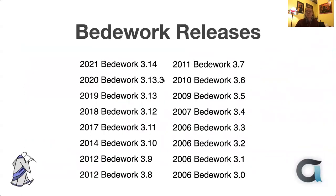These are some of the releases over time, starting with 3.0 in 2006. We got a bit more careful over the numbering as time's gone on. We're still running on 3. I'm toying with the idea of going to 4 — that was going to be the big schema change, which I still haven't got around to. Maybe the changes I'm making with Wildfly are appropriate for a change to 4. We'll see.